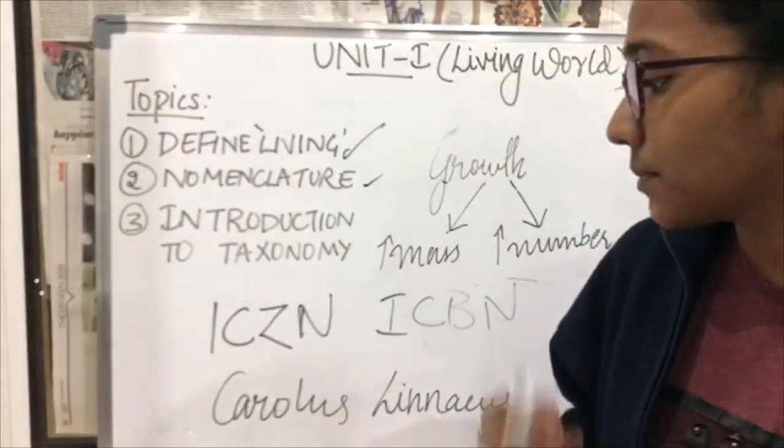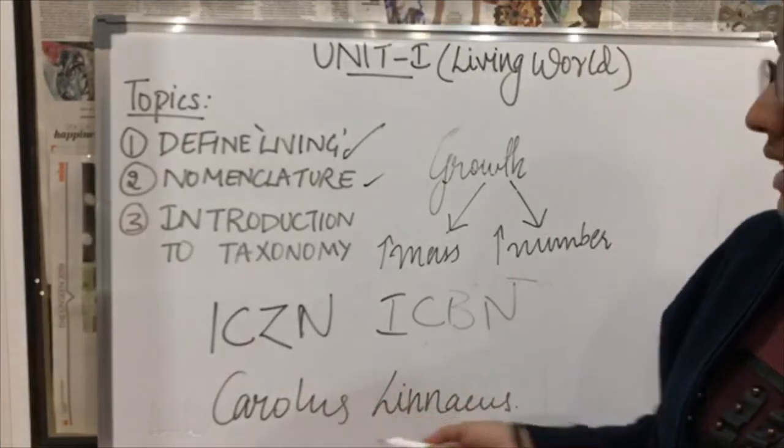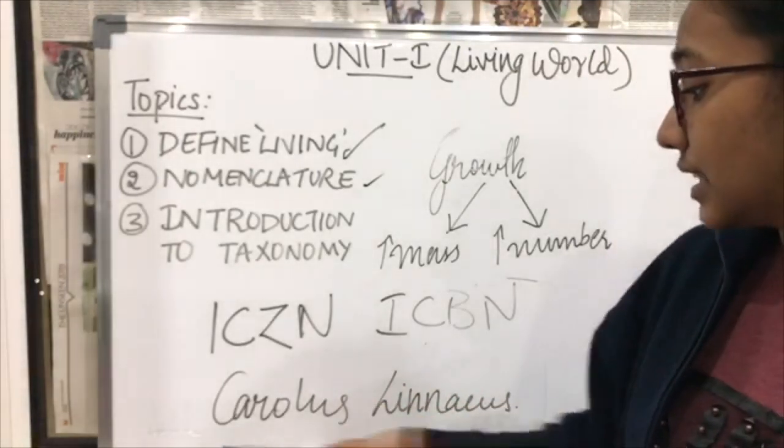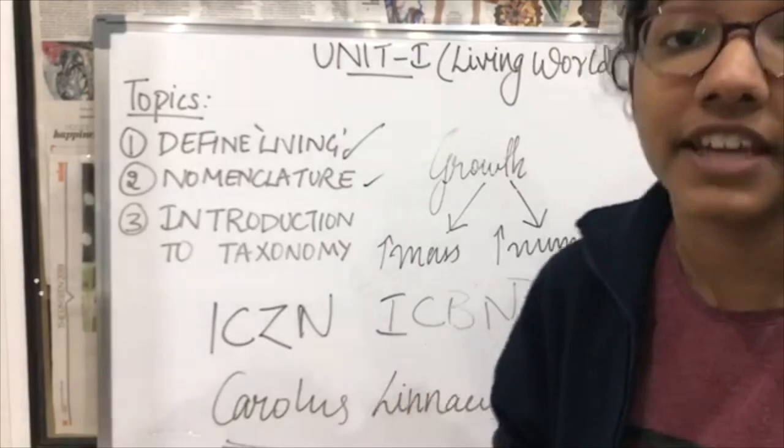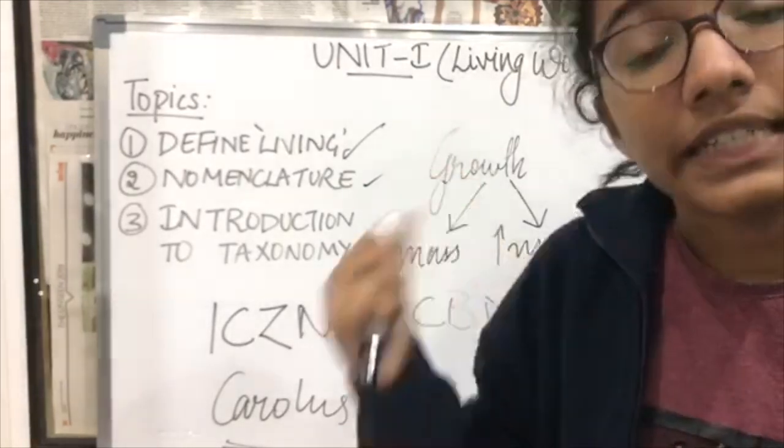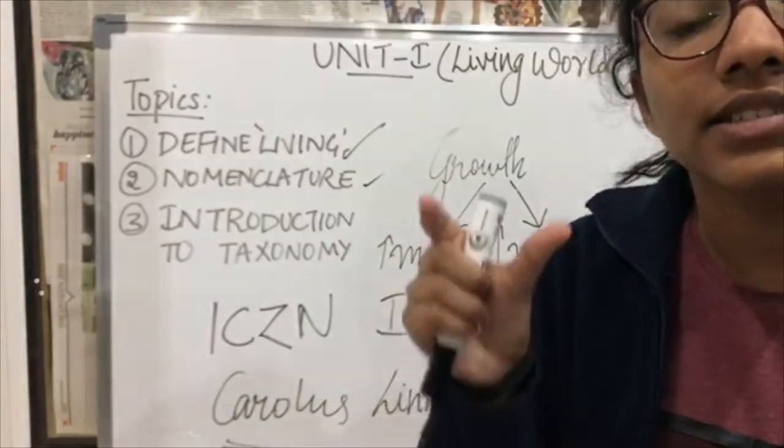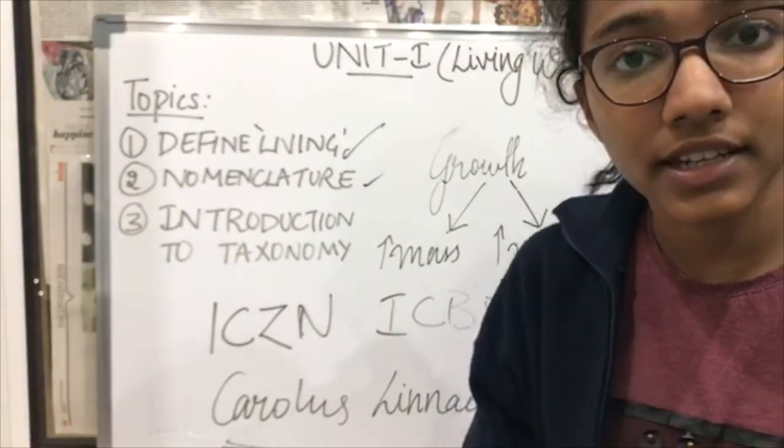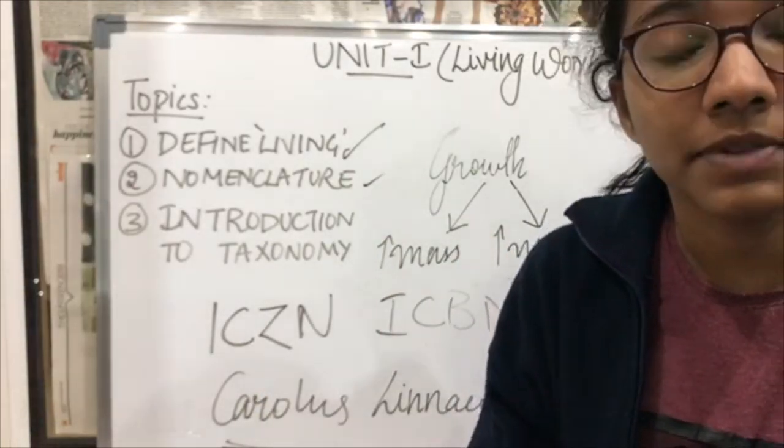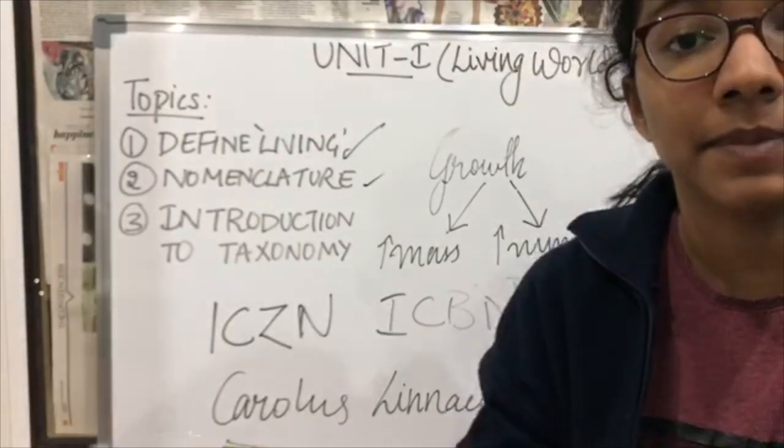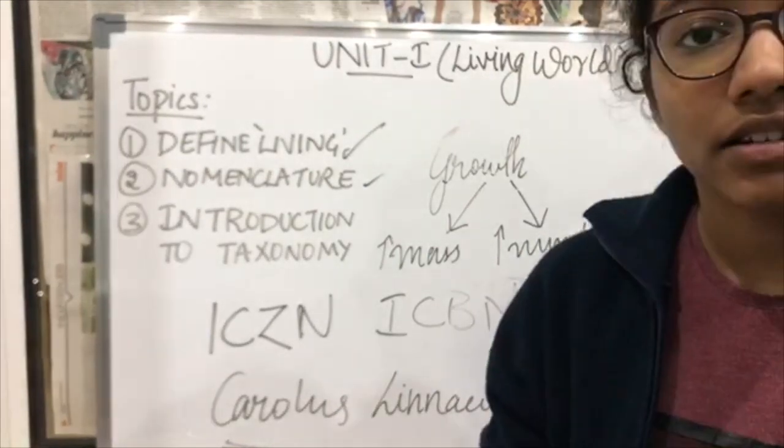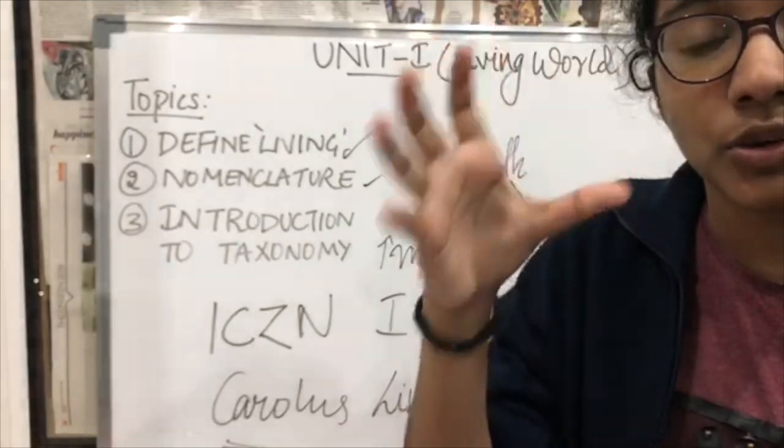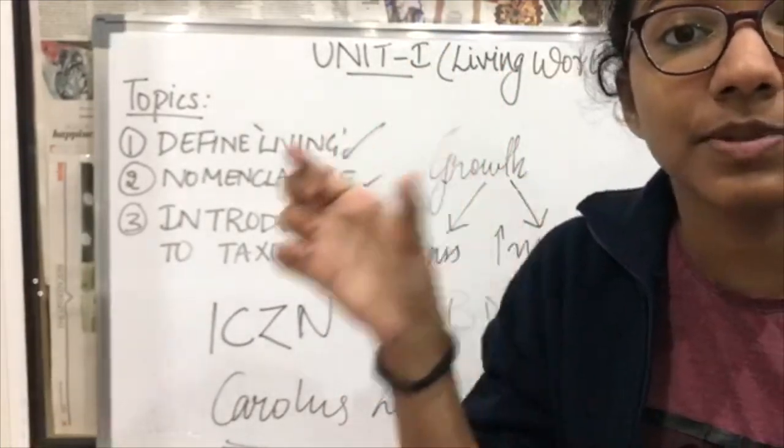Now the principles of nomenclature. This is very important. Nomenclature was given by the scientist Carolus Linnaeus. This name is very important, please remember. What he said is that each scientific name had two components: the generic name or generic epithet, and the species name or specific epithet.